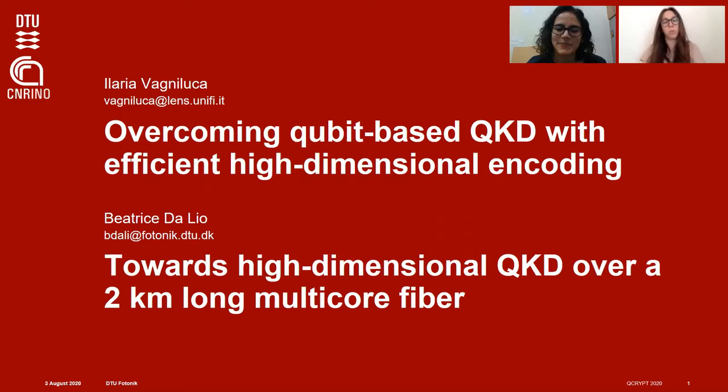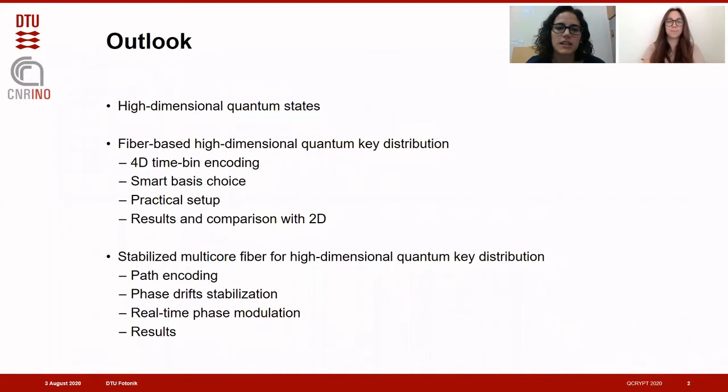We will start with introducing high-dimensional quantum states and their benefits in quantum communication. Then we will present a new scheme for four-dimensional QKD with time-bin encoding that we have tested with a simplified fiber-based setup together with a two-dimensional protocol. And then we will report a demonstration of transmission of path-encoded qudits over a multicore fiber of two kilometers, using active phase stabilization and real-time phase modulation.